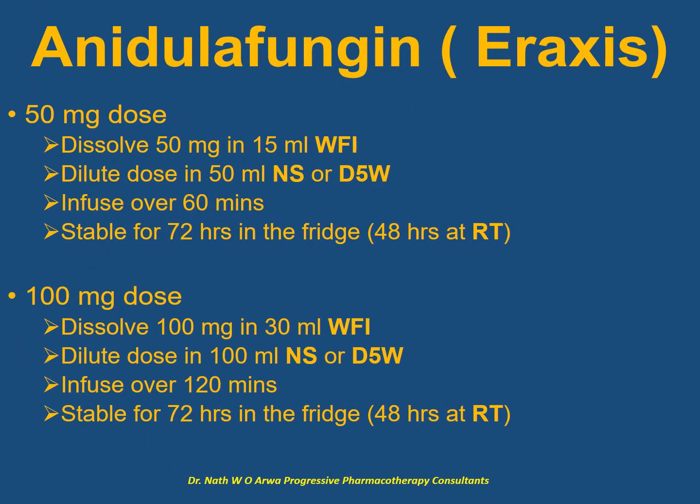For anidulafungin, an echinocandin, for doses of up to 50 mg, dissolve the 50 mg in 15 ml of water for injection prior to dilution in 50 ml of normal saline or dextrose 5%, then infuse over 30 minutes. Solutions are stable for 72 hours in the fridge or 48 hours at room temperature. For 100 mg doses, dissolve each 100 mg vial in 30 ml of water for injection, dilute in 100 ml of normal saline or dextrose 5%, and infuse over 2 hours precisely. Stability remains 72 hours in the fridge or 48 hours at room temperature.